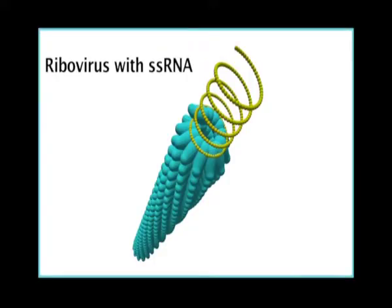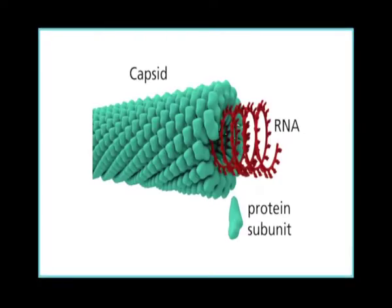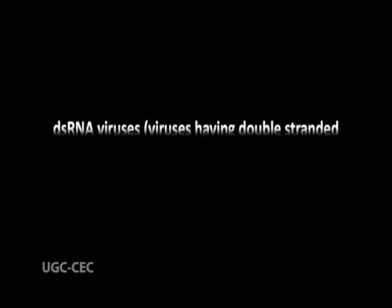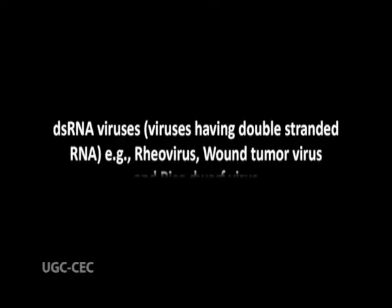Riboviruses have been classified into two categories: riboviruses with single-stranded RNA and riboviruses with double-stranded RNA. Viruses with single-stranded RNA are written as SS RNA viruses. For example, TMV — tobacco mosaic virus — has single-stranded RNA. The other group of viruses is called DS RNA viruses, which are viruses with double-stranded RNA.